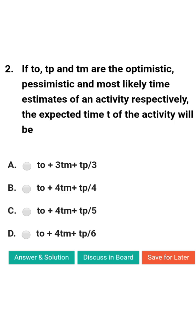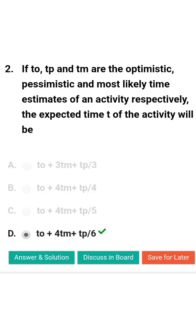Question 1: If t0, tp, and tm are the optimistic time, pessimistic time, and most likely time estimate of an activity respectively, the expected time t of the activity will be: option A: t0 + 3tm + tp divided by 3; option B: t0 + 4tm + tp divided by 4; option C: t0 + 4tm + tp divided by 5; option D: t0 + 4tm + tp divided by 6. The correct answer is option D: t0 + 4tm + tp divided by 6.